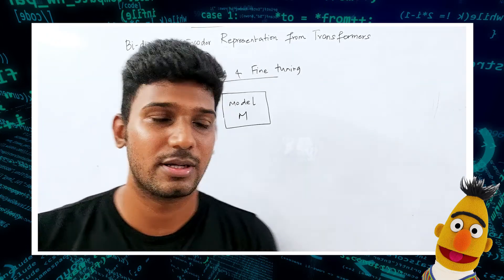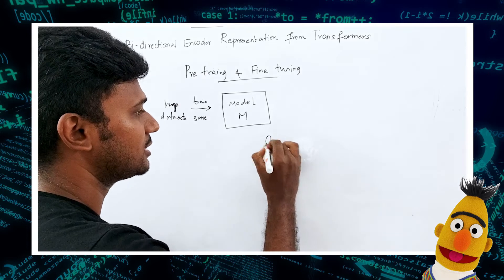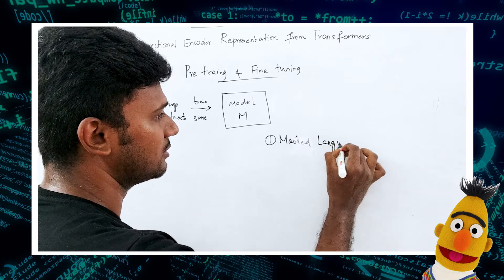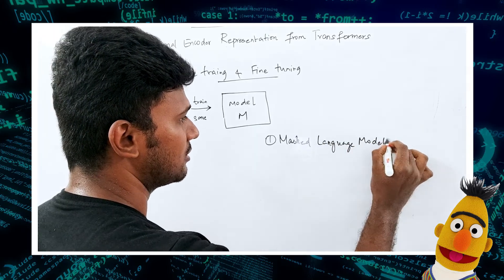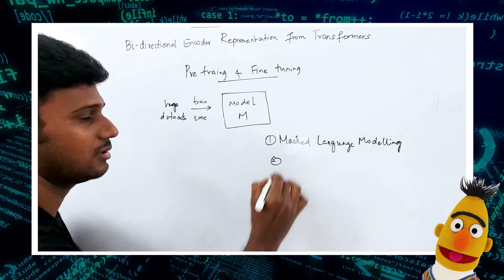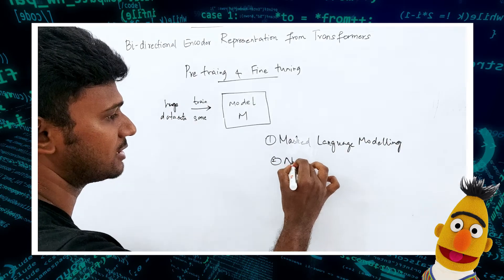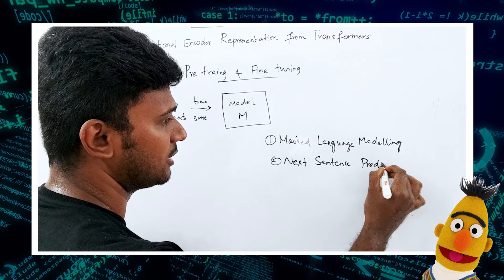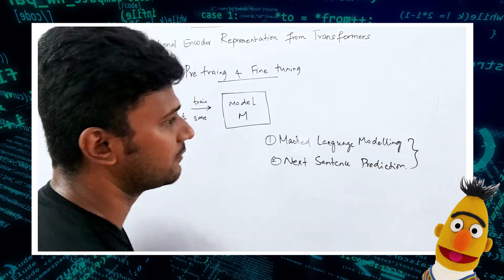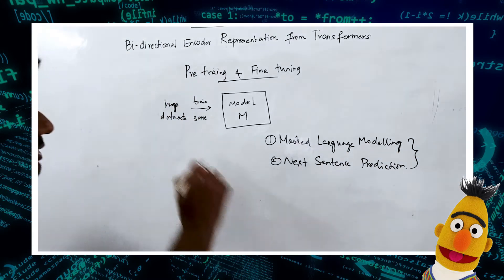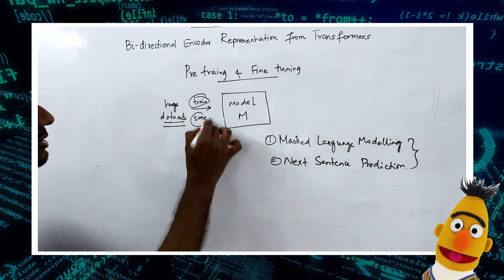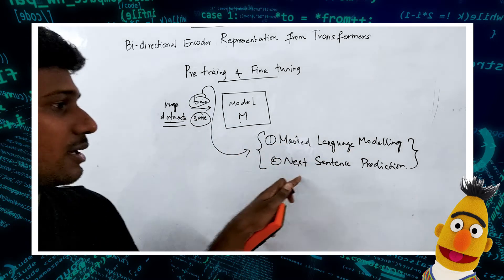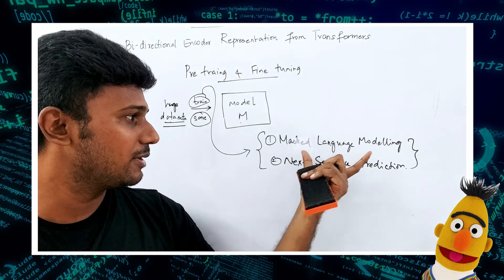One of the tasks that BERT is trained on is Masked Language Modeling, and the other is Next Sentence Prediction. These are the two things on which BERT is pre-trained on huge datasets. The model is saved after training, and this training happens on these two interesting tasks: Masked Language Modeling and Next Sentence Prediction.